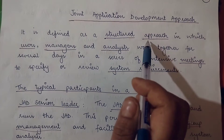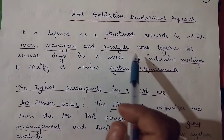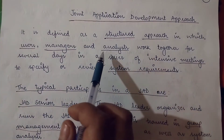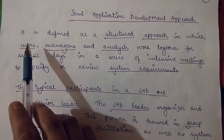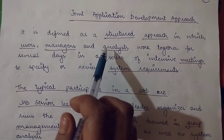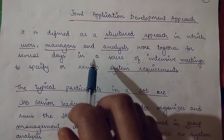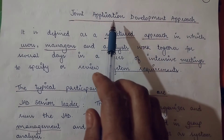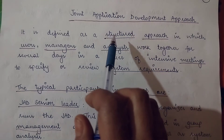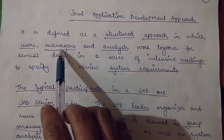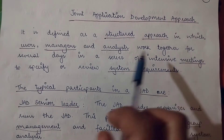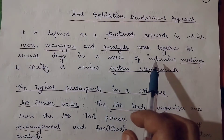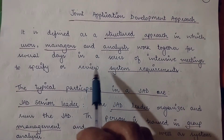What is JAD or Joint Application Development? It is defined as a structured approach in which users, managers, and analysts work together for several days. A group or team of people work together — that is why the name 'Joint Application Development' has been given. It is a joint effort of the users, the managers, and the analysts, who work together in a series of intensive meetings.